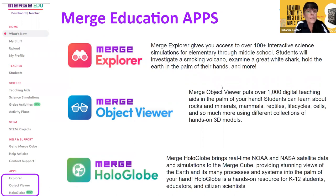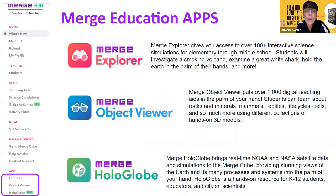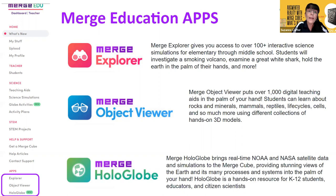The bottom part of the dashboard shows the Merge Education apps — you still need to download them onto a device to use them. Merge Explorer has over 100 interactive science simulations for primary and middle school students. Object Viewer has over 1,000 digital teaching aids as three-dimensional models. And of course there's Hollow Globe with its real-time NOAA and NASA satellite data and simulations. The worksheets are in PDF format and are not editable, though you could use Adobe Acrobat's editing feature to make changes.